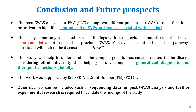In conclusion, this post-GWAS analysis of lung function between two different population GWAS through functional prioritization identified common sets of SNPs and genes associated with risk loci. This analysis not only replicated previous findings but also identified novel gene candidates not reported in previous studies. For example, the association of DDAH2 was identified — a gene related to upregulation of nitric oxide and associated with COPD — which was not reported in the original studies. We believe this study will help in understanding the complex genetic mechanisms related to the disease, considering ethnic diversity.